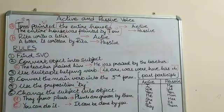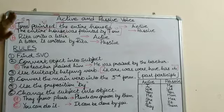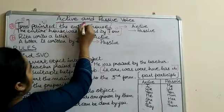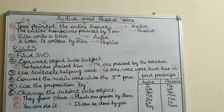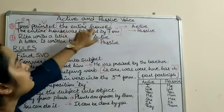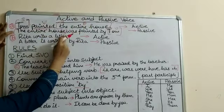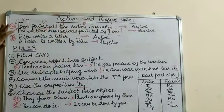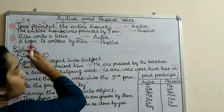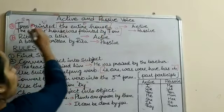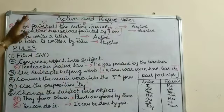In the active voice, the performer of the action is the subject and the receiver of the action is the object. But when we change it into the passive voice, the receiver of the action — the entire house — was the object and it becomes the subject. Tom was the subject in the active voice and becomes the object in the passive voice.